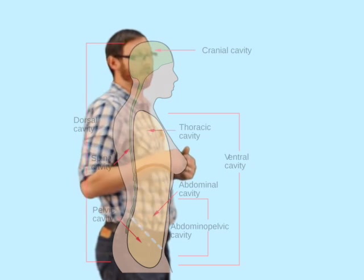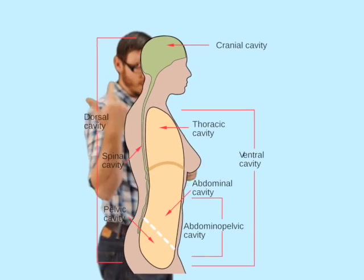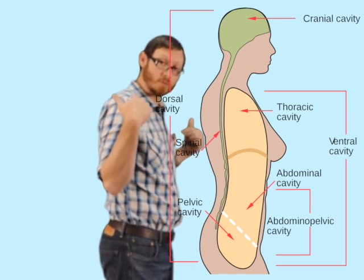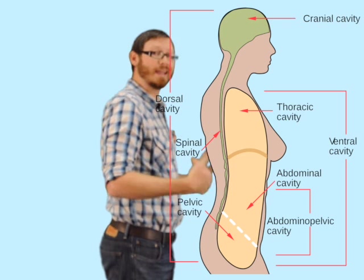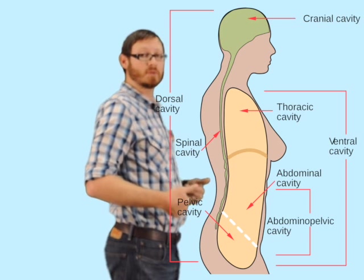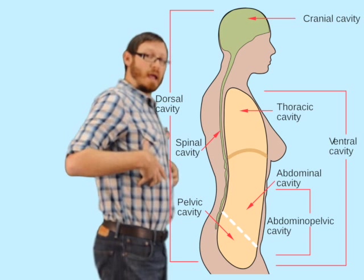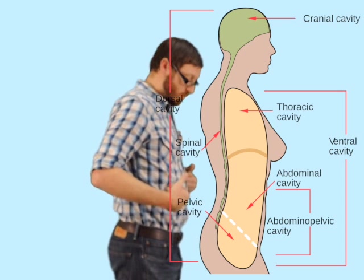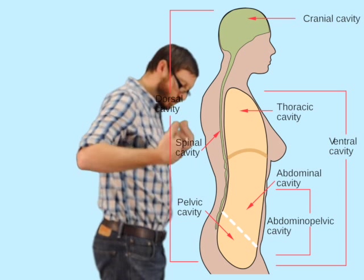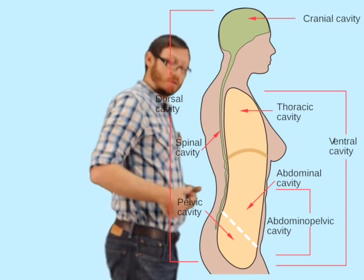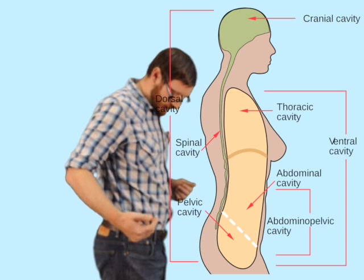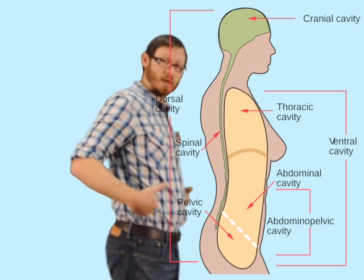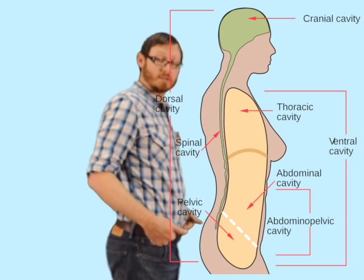If we look at the posterior cavity and the cranial cavity, you have your brain in the cranial cavity, then you have your spinal cord going through the vertebral cavity. When we look at the anterior cavity, we can subdivide it into the thoracic, which is separated from the abdominal pelvic by an organ known as the diaphragm. When you go inferior to the diaphragm, you get into the abdominal pelvic cavity.